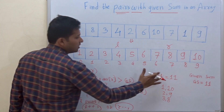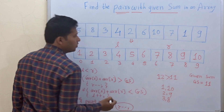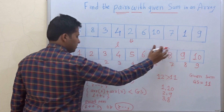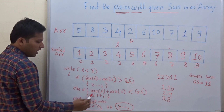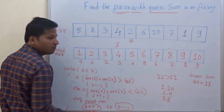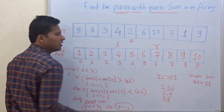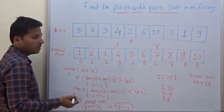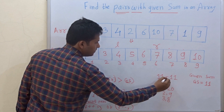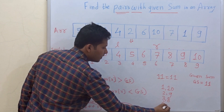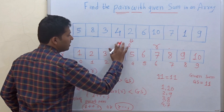Now 4 plus 8 is 12, which is greater than 11, so we decrement R. We decrement R when the sum is greater than the given sum, and we increment L when the sum is less than the given sum. After decrementing R, 4 plus 7 is 11, which is equal to the given sum, so we write the pair 4, 7, and then increment L.